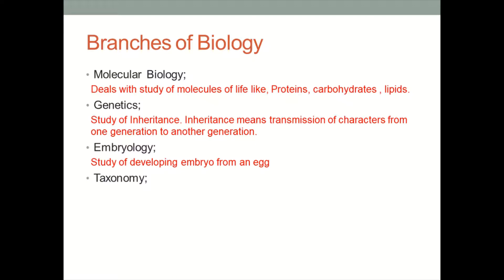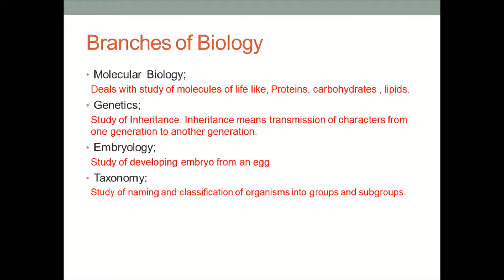Taxonomy is the branch of biology in which we study about the naming, classification, and grouping of living organisms into groups and subgroups. There are millions of different types of living organisms in the world, so it is not easy to know all about them. Scientists keep these living organisms into groups and subgroups. The branch of biology dealing with the naming and classification of living organisms is called taxonomy.